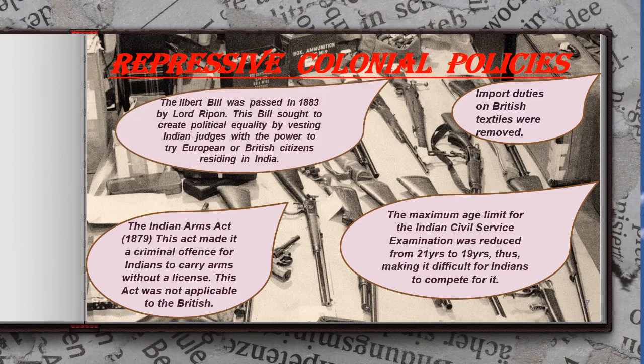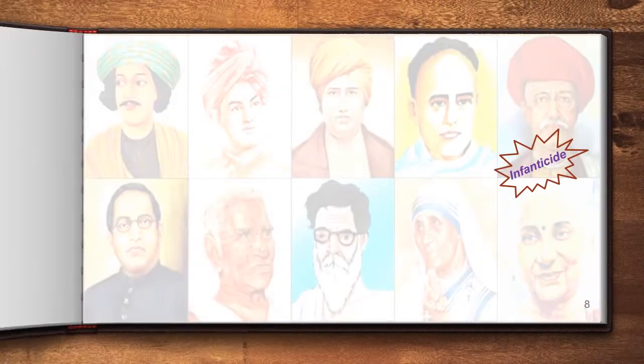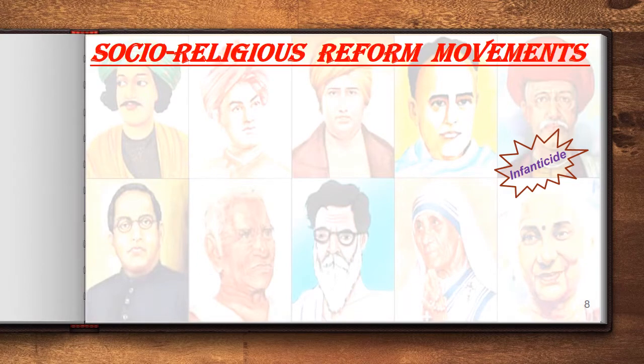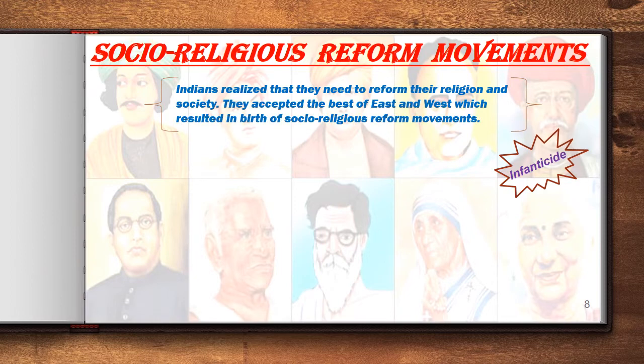The Ilbert Bill was passed in 1883 by Lord Ripon. This bill sought to create political equality by vesting Indian judges with the power to try Europeans or British citizens residing in India. However, the bill was withdrawn. Moving further, Indians realized that they needed to reform their religion and society. They accepted the best of East and West, which resulted in the birth of social-religious reform movements.